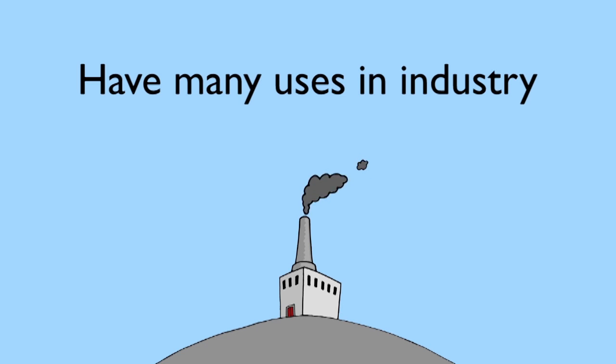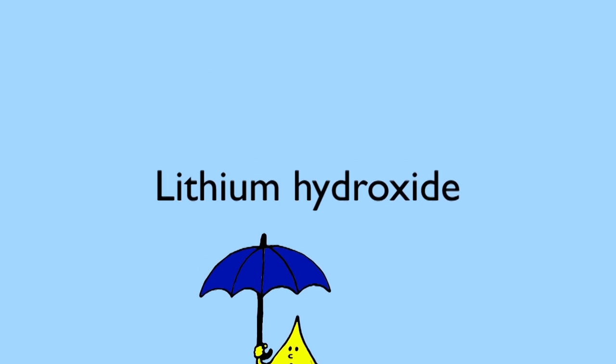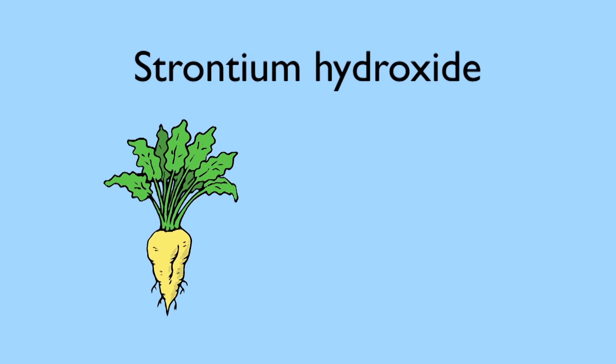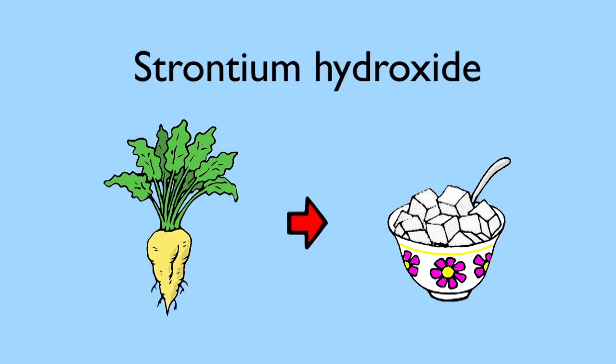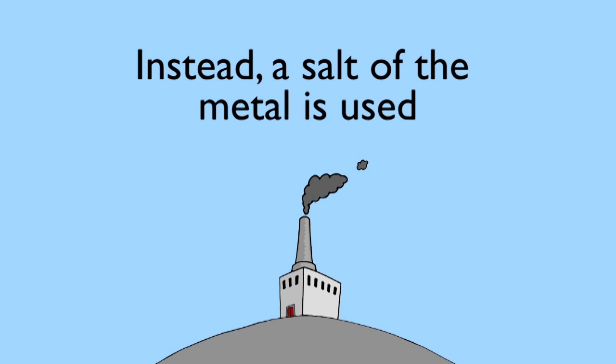Metal hydroxides have many uses in industry. Lithium hydroxide is used to make a highly water repellent grease. Strontium hydroxide plays a role in the manufacture of table sugar from the sugar beet crop. But you'll never see hydroxide made in industry by adding the pure metal to water. It is far better to start with a salt of the metal, which is easier to make and cheaper to acquire.